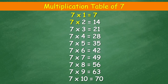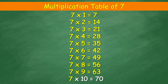7 times 1 equals 7. 7 times 2 equals 14. 7 times 3 equals 21. 7 times 4 equals 28. 7 times 5 equals 35. 7 times 6 equals 42. 7 times 7 equals 49. 7 times 8 equals 56. 7 times 9 equals 63. 7 times 10 equals 70. Thank you for watching.